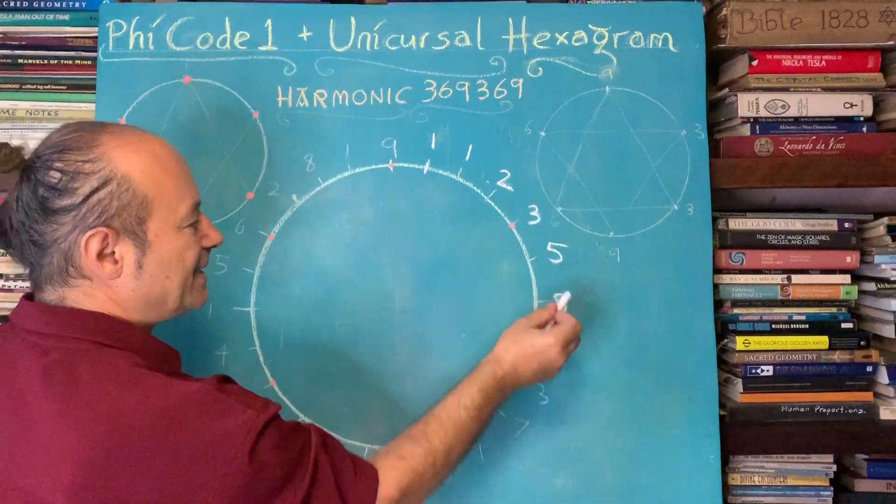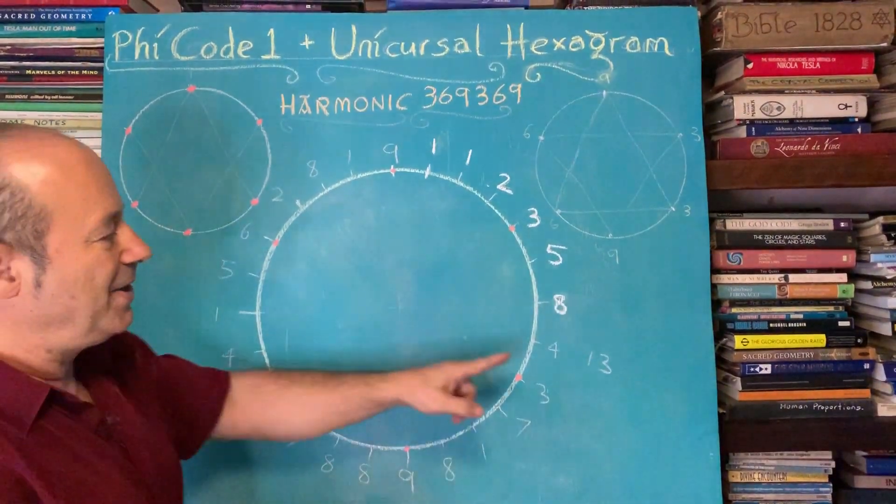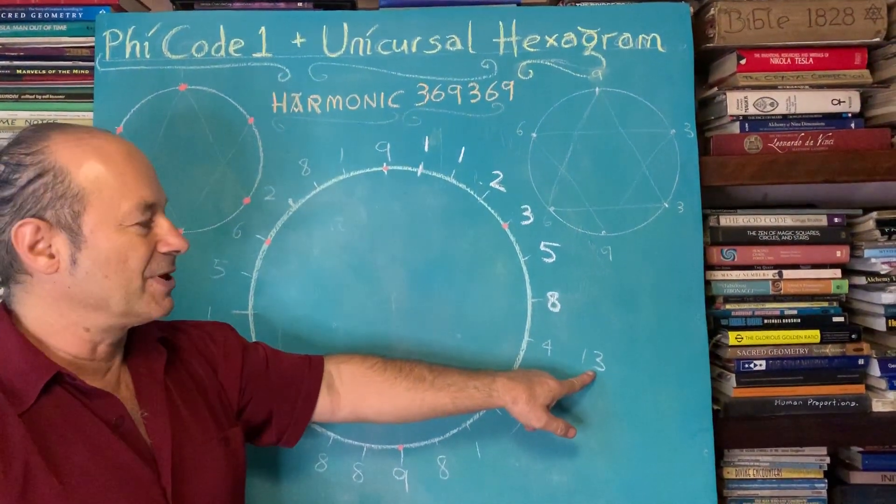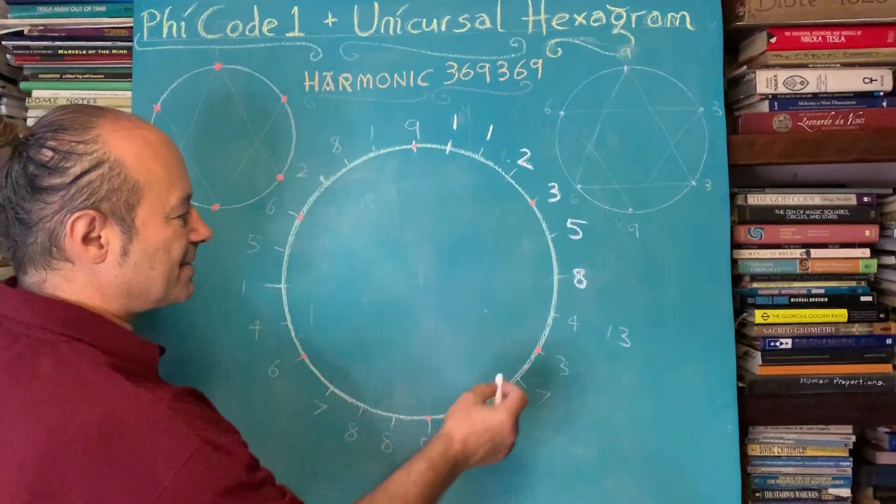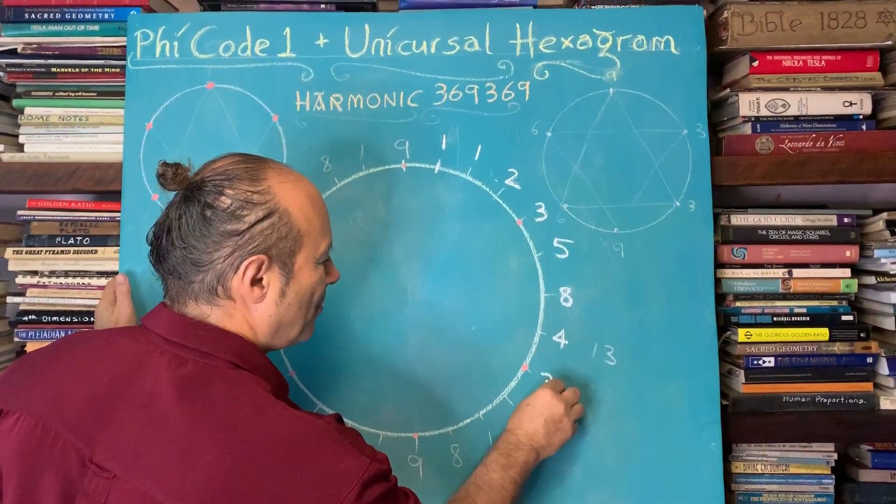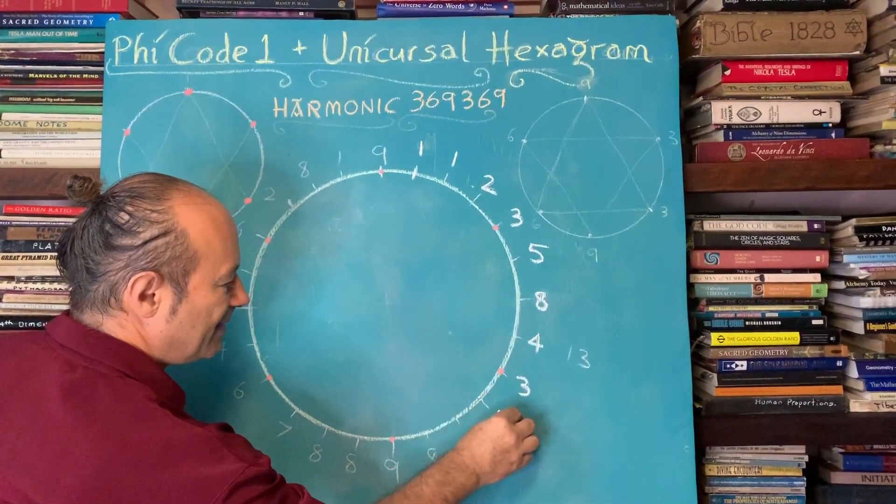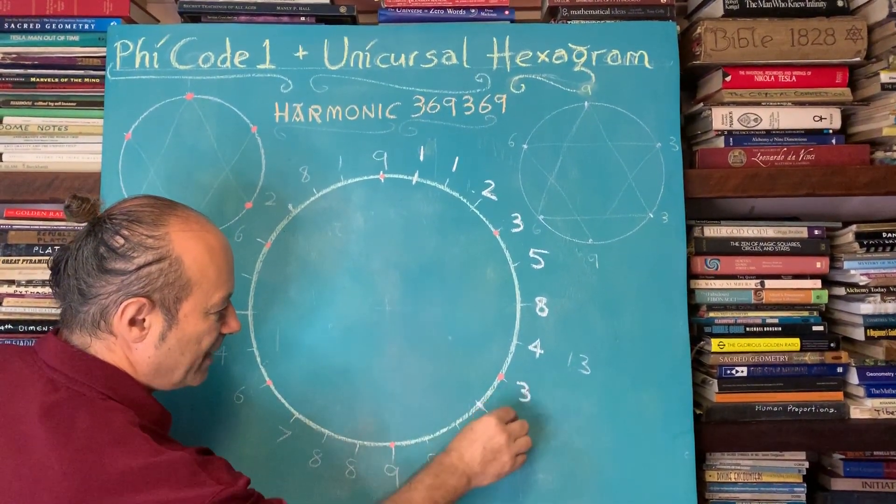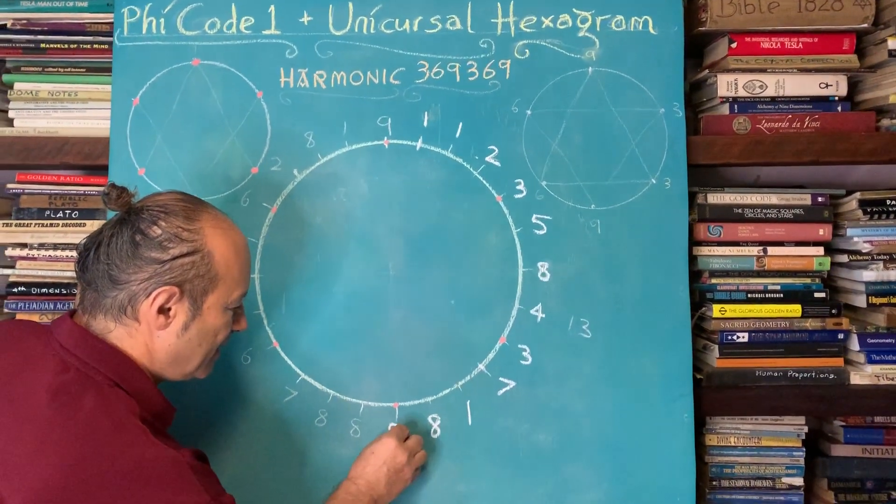It's an infinitely additive sequence. But when we get to 5 and 8 is 13, instead of writing 13, we take away 9. That's called digital compression. Instead of taking away 9, we just say 1 plus 3, we add the digits, is 4. And 8 and 4 is 12, makes 3. 3 and 4 is 7. 3 and 7 is 10, makes a 1. I'm just going to write these in, 8, 9.